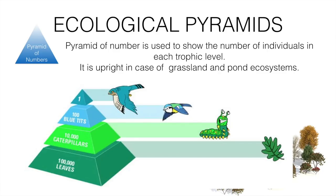The pyramid of numbers counts the number of organisms at different trophic levels. For example, there may be 1 lakh leaves on a tree, about 10,000 caterpillars, 100 birds, and only 1 eagle. As the number of organisms decreases from leaves to caterpillars to birds to eagle, it forms a pyramid known as the pyramid of numbers.